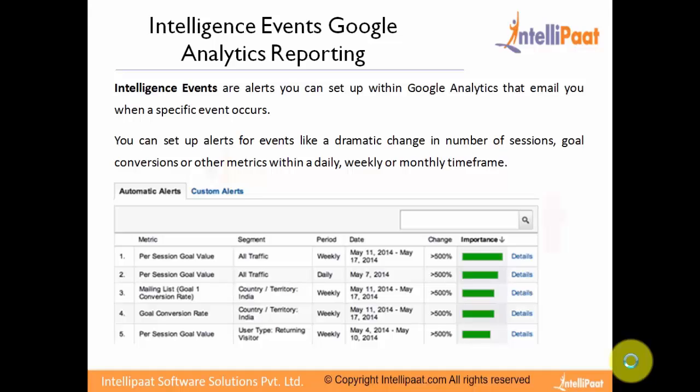You get to choose the metric — for example, per session goal value. You get to choose a segment, that is all traffic or by country — for example, India. You can choose the period by weekly or daily, choose the date range, and then you would get the final output.